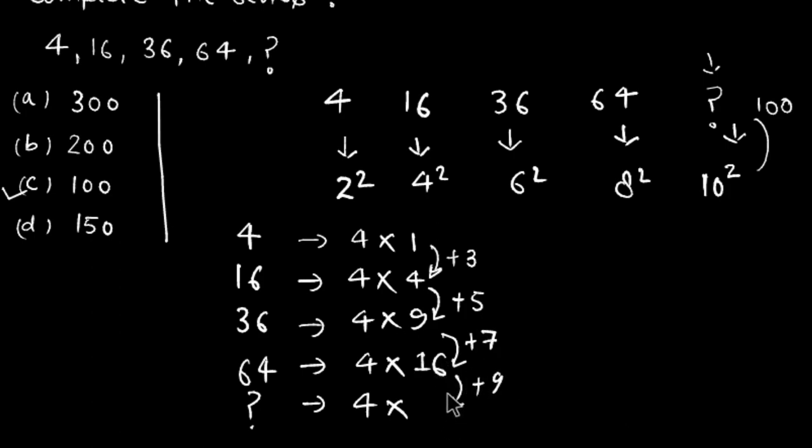For the next term, I increase 16 by 9 (which is 7 plus 2), so 16 plus 9 equals 25, and 25 times 4 is 100. So again by this logic, we find the answer is 100. These two logics can both be applied to find the number that appears in place of the question mark.